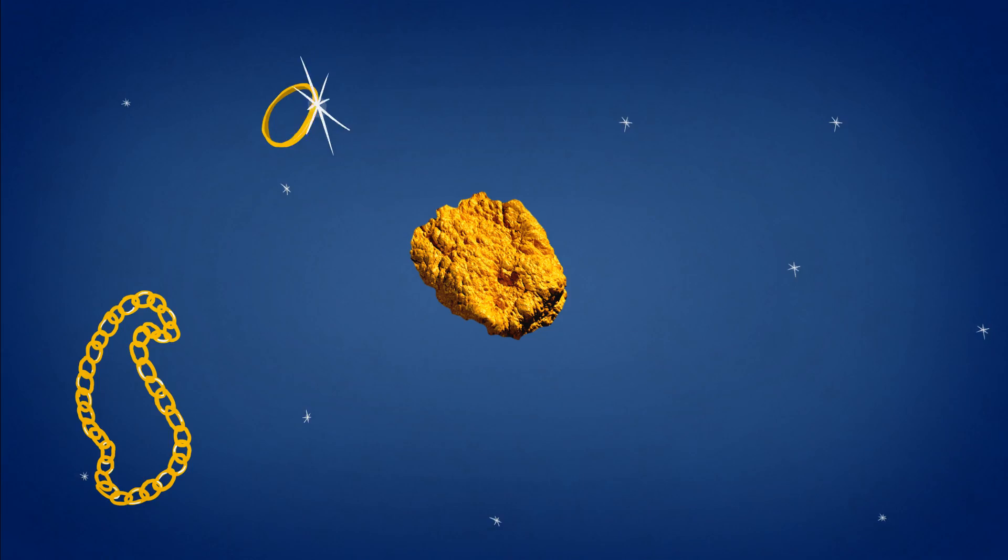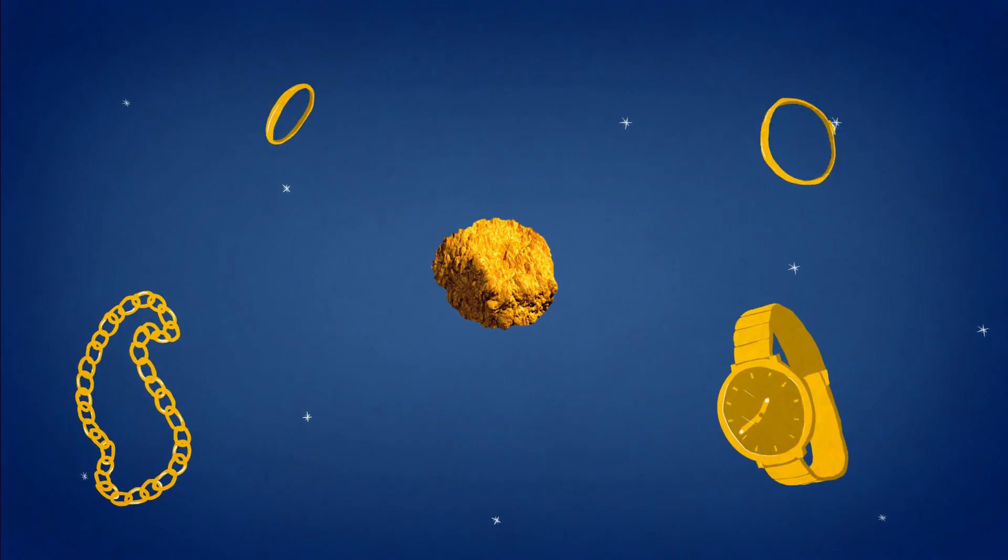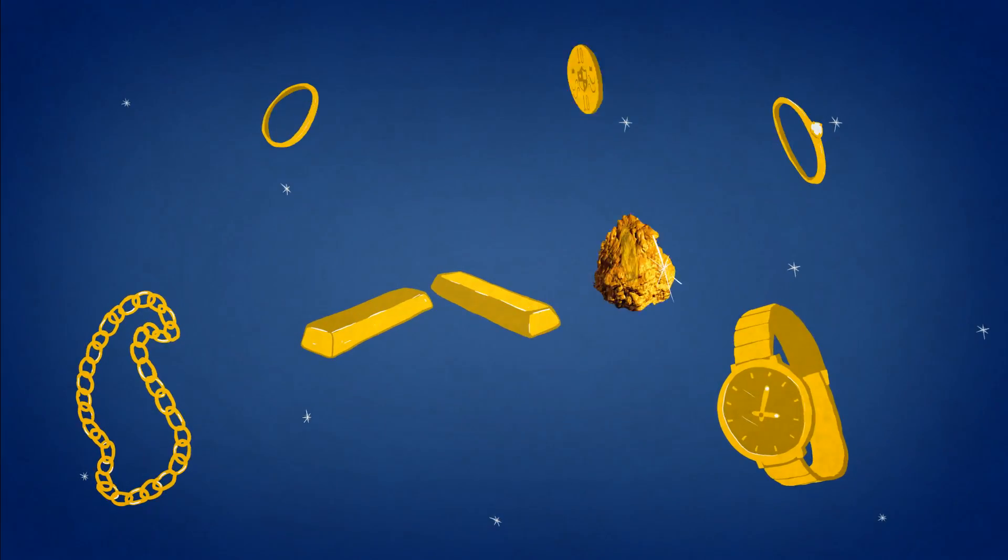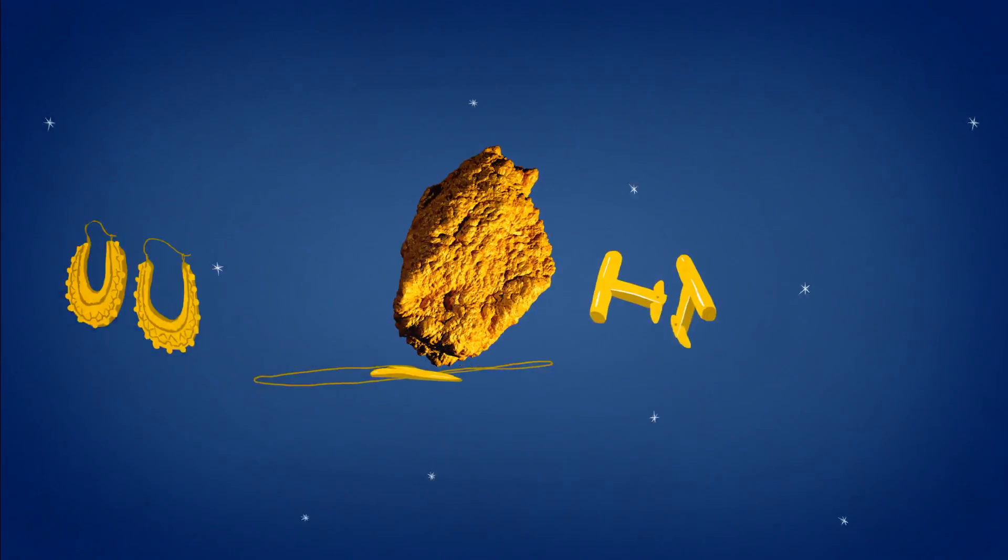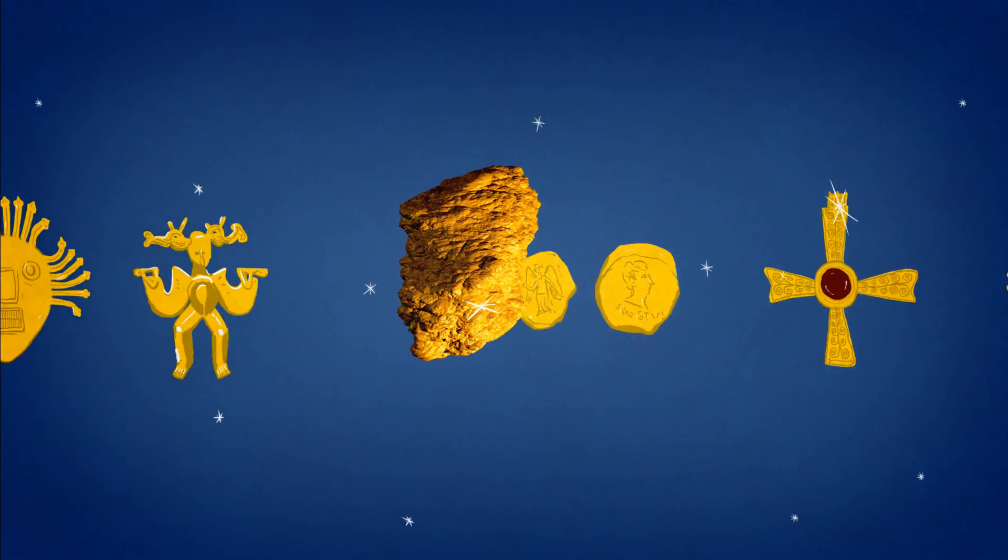Half of the gold that comes out of the ground is used to make jewellery. Another big chunk is used to make gold bars and coins. We've been using gold in this way for thousands of years.